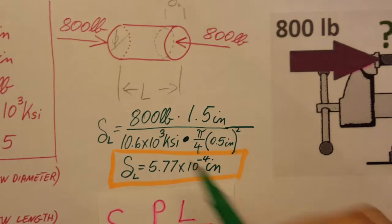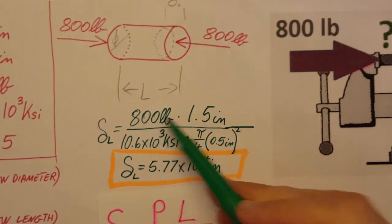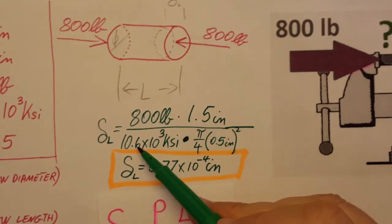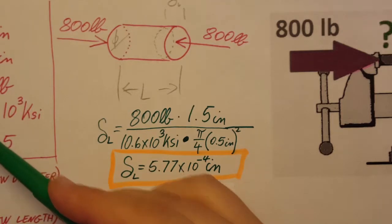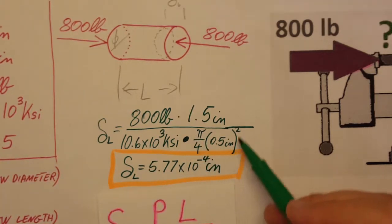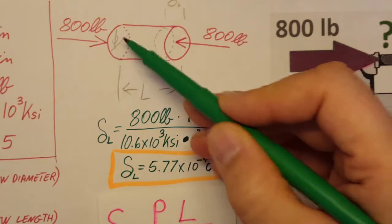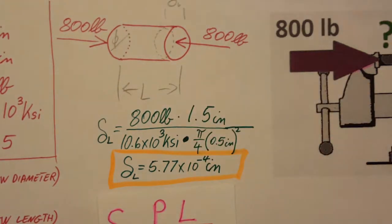I went ahead and plugged in the values that we have. We know the force, the length, the Young's modulus is also given, and then the area. The area is circular, it's a piece of a rod, therefore pi over 4 times 0.5 inches squared.